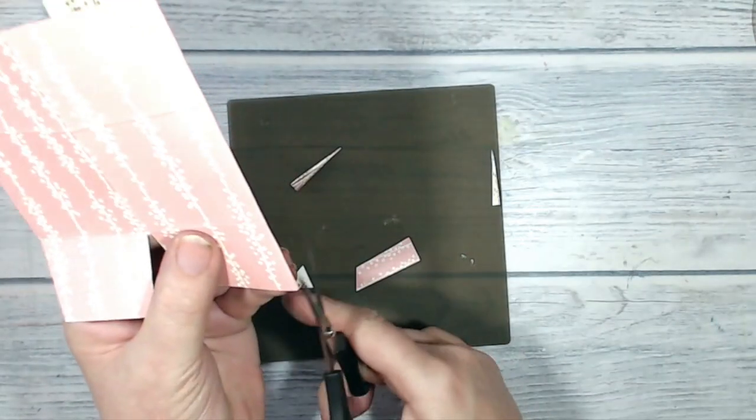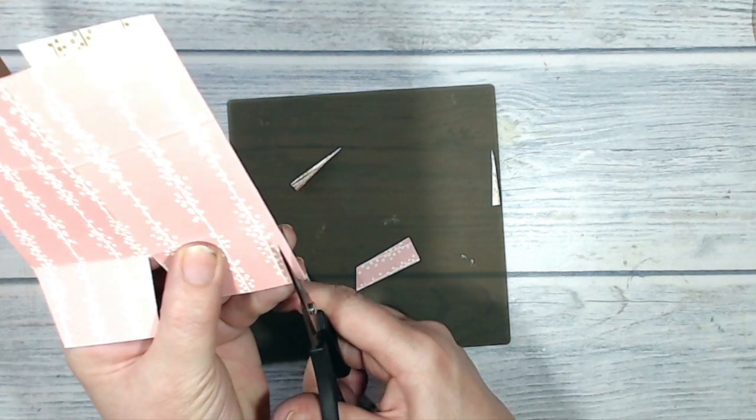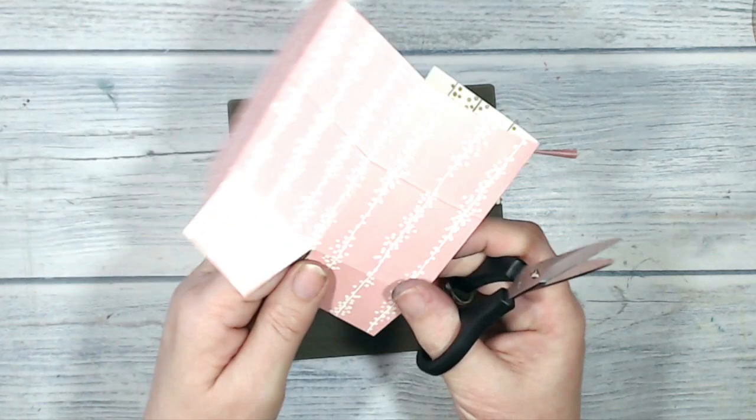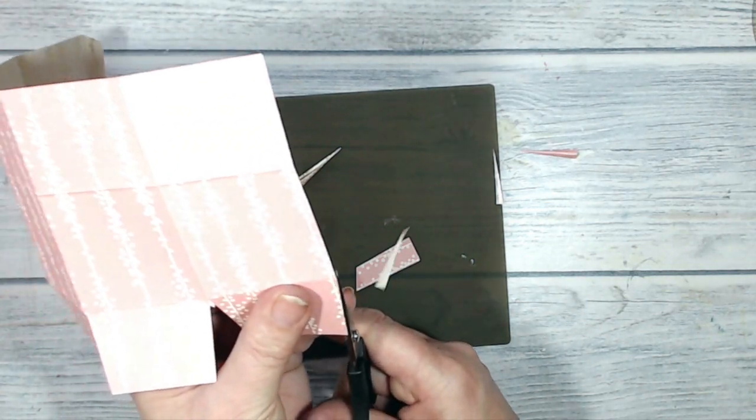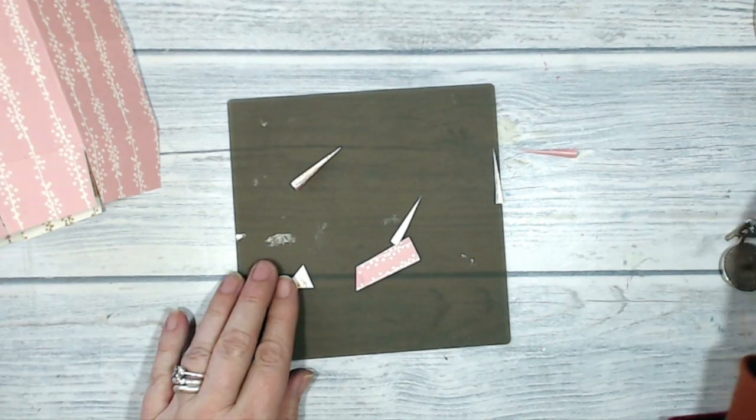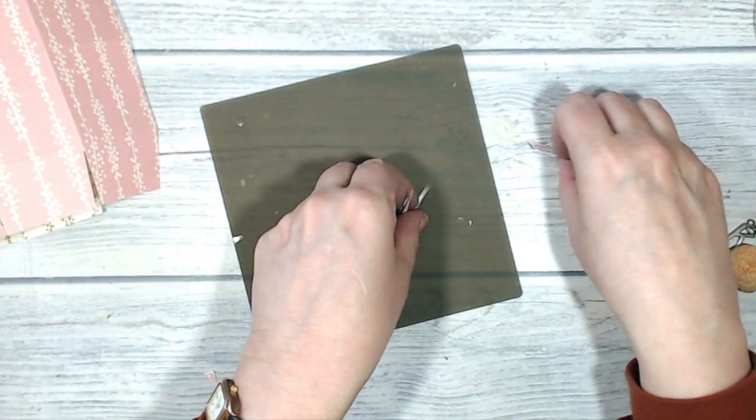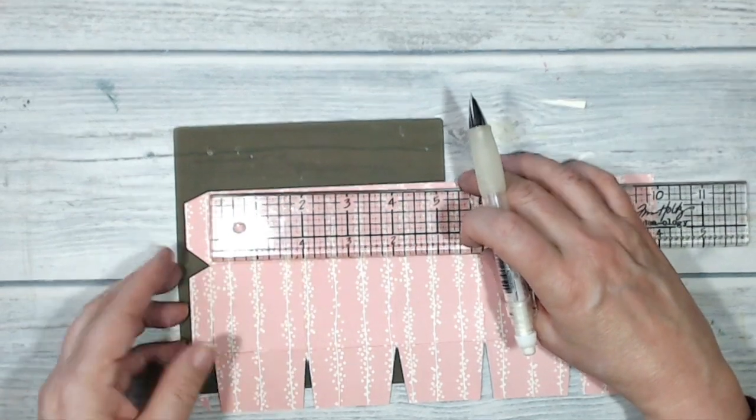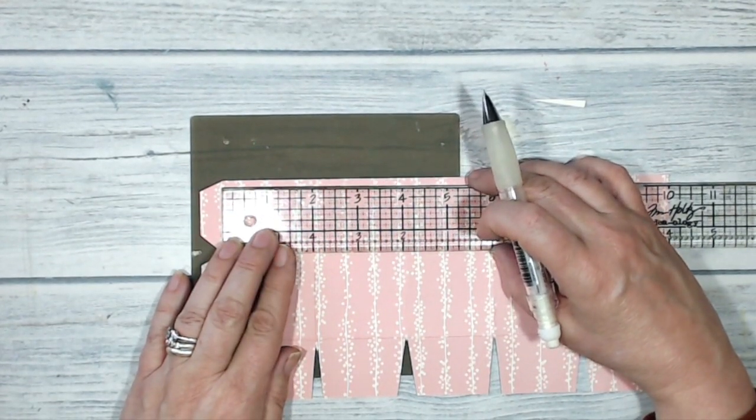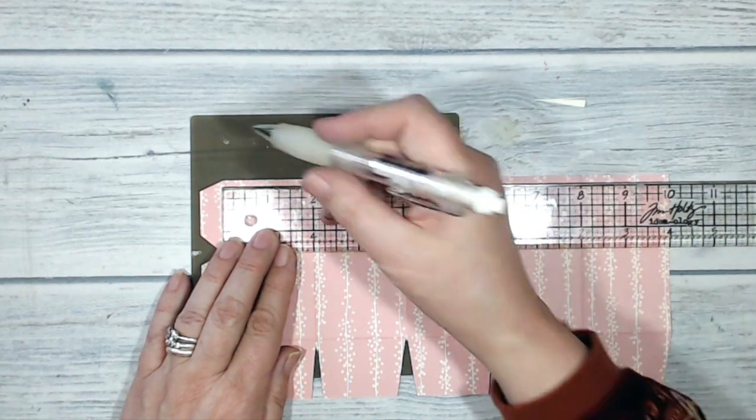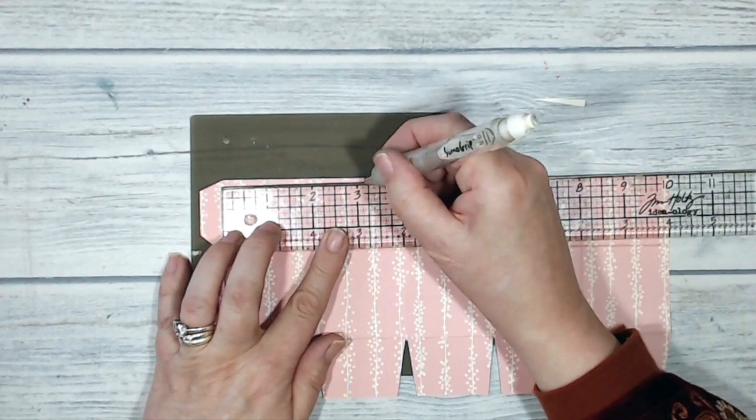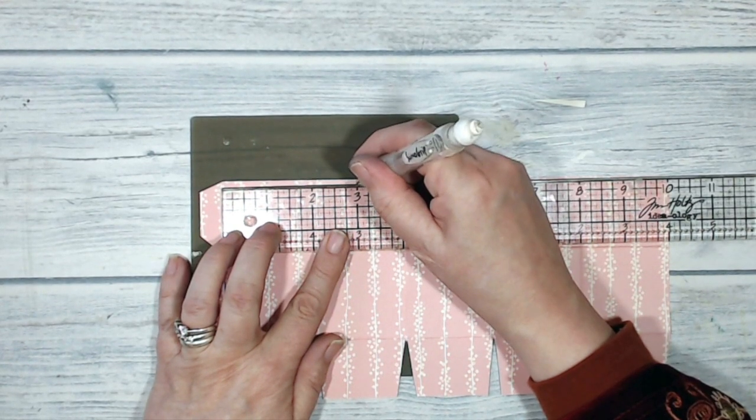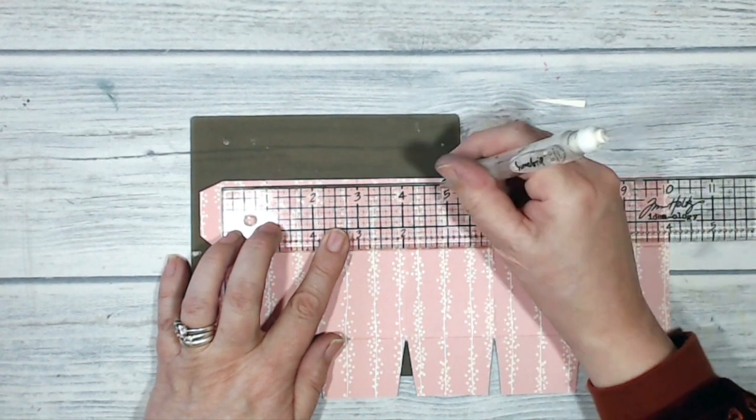If you've got the gift bag punch board, you could absolutely do these edges with the gift bag punch board and that would give you a lovely finish on them. Now I'm going to mark the center of each of these panels. They're each two inches wide, so I'm going to mark one inch, at three inches, at five inches.